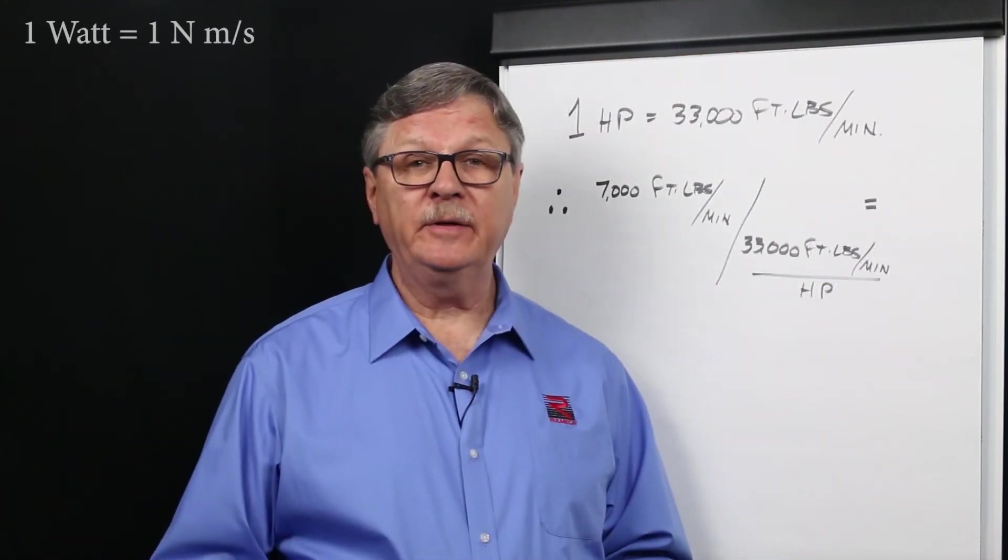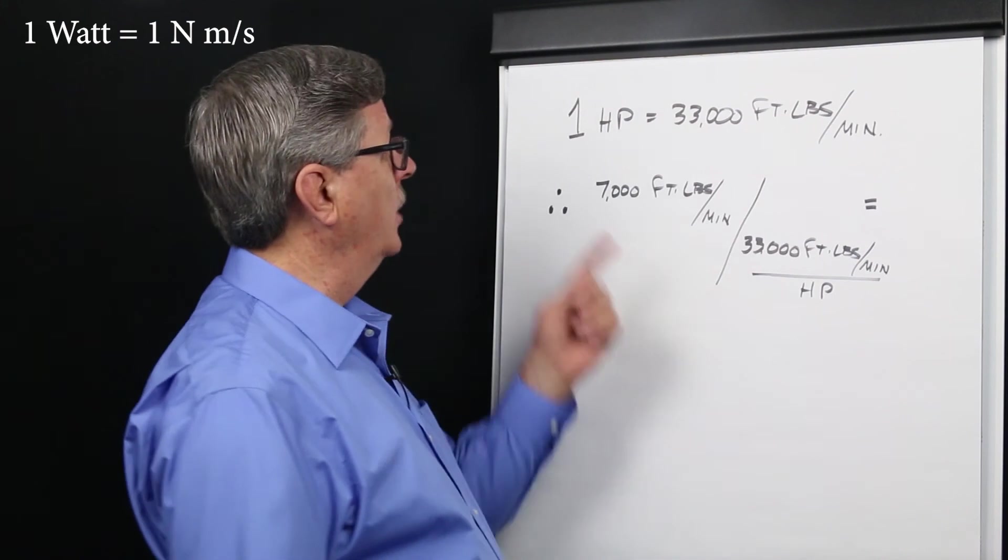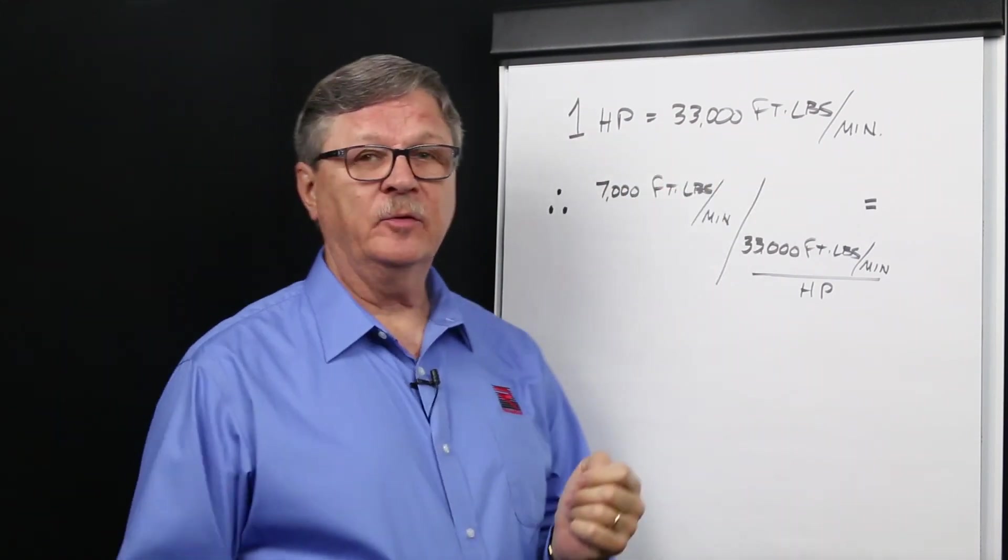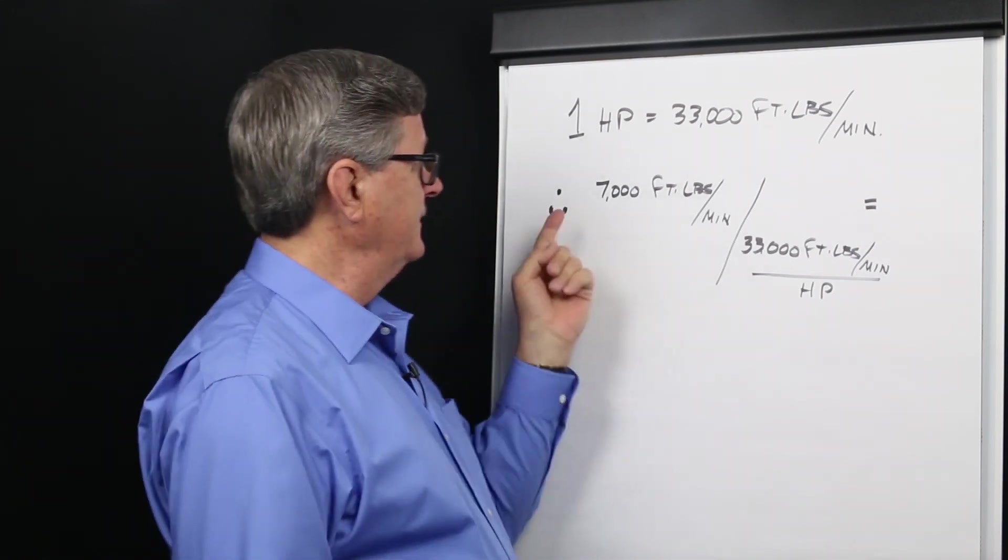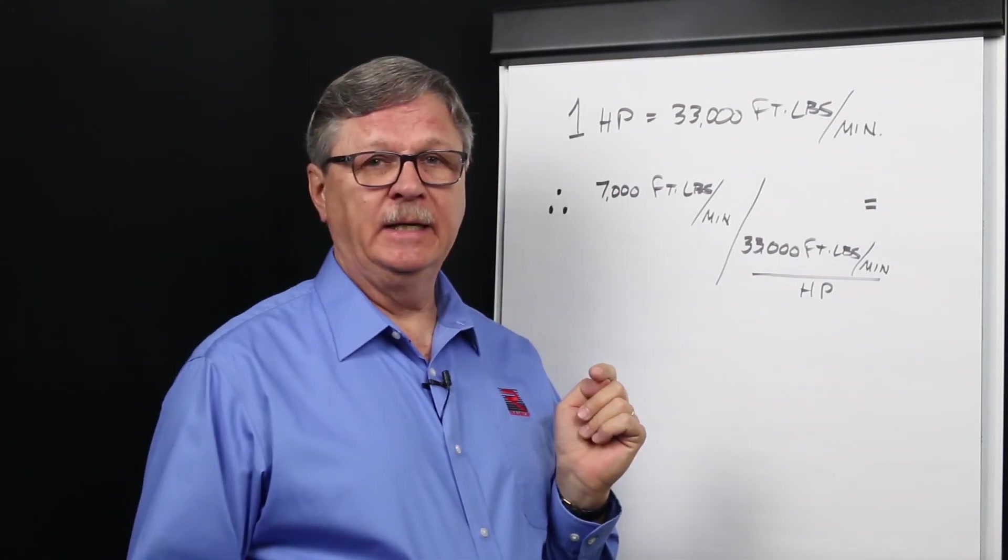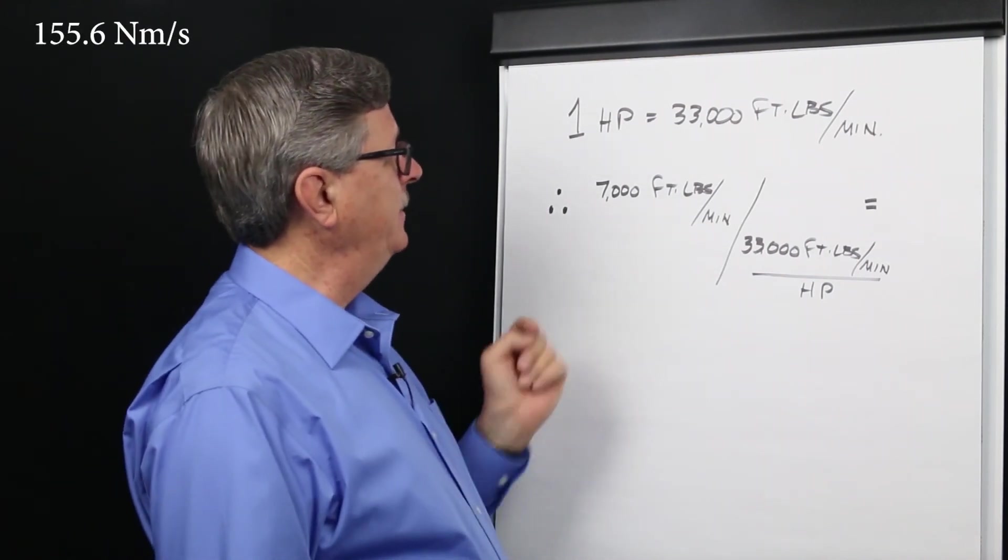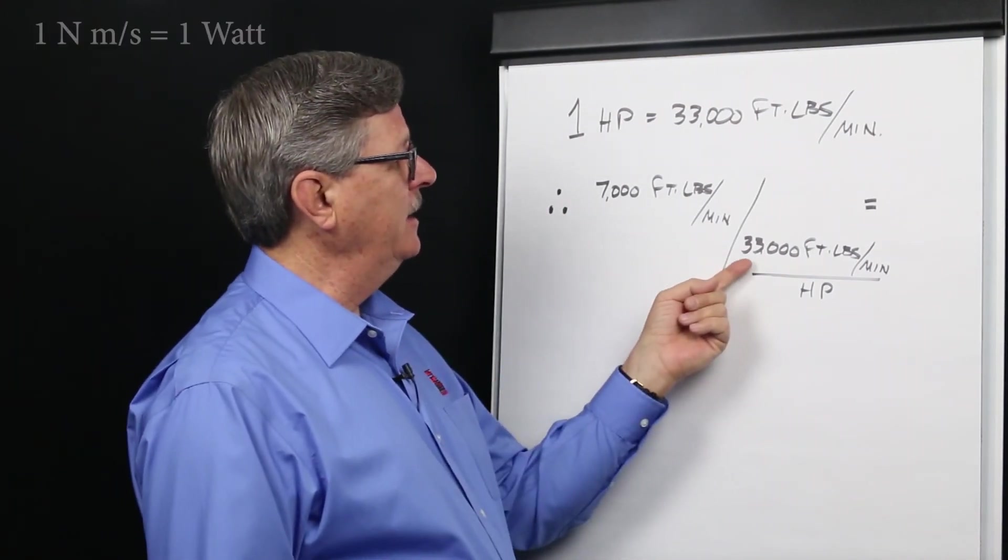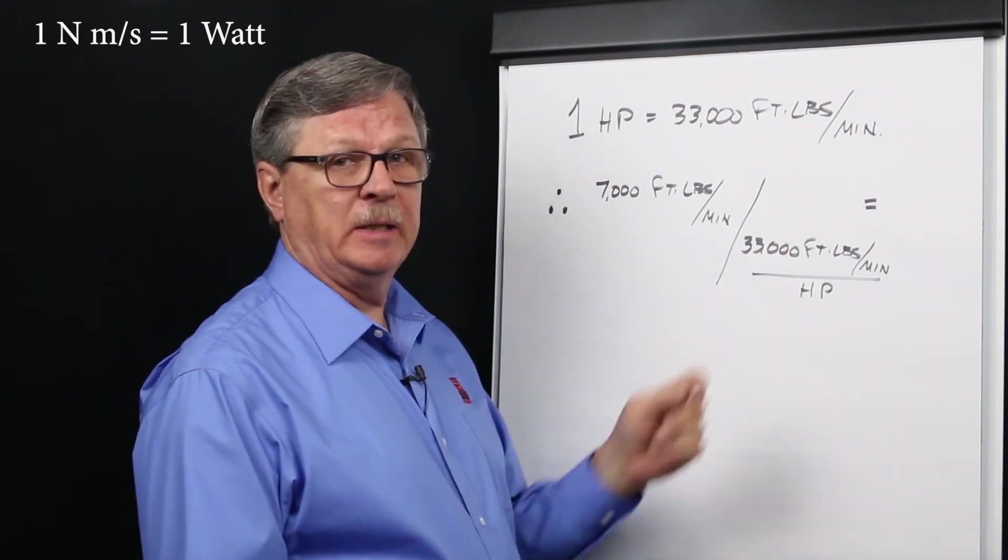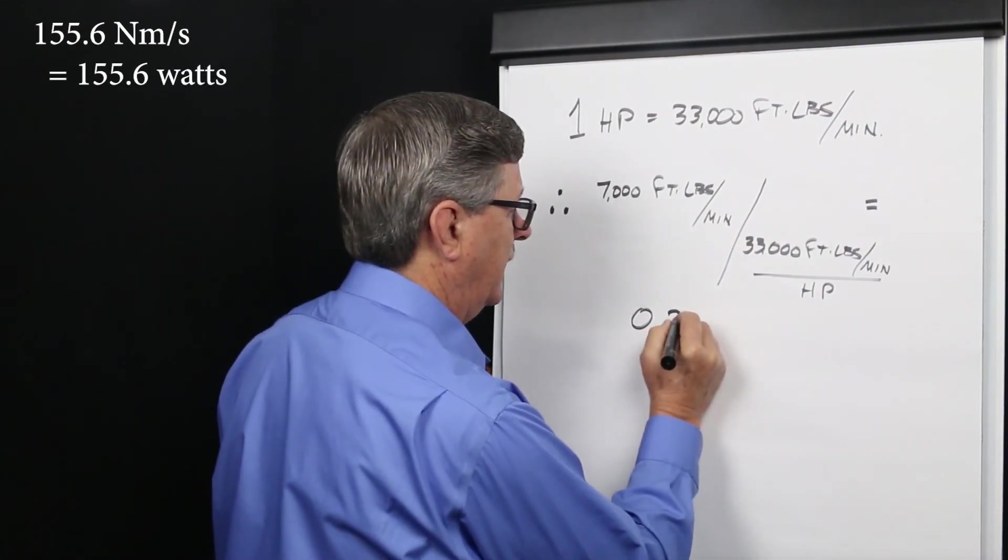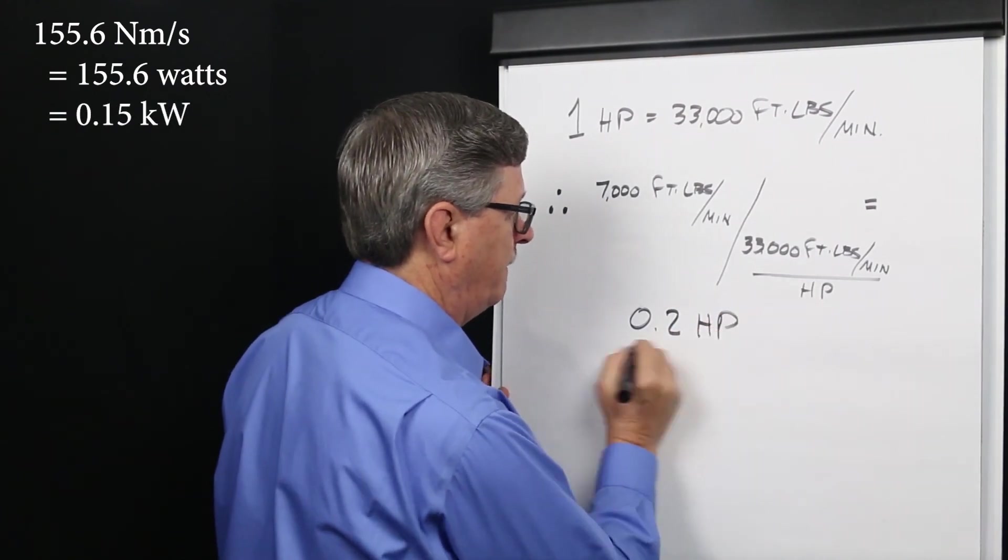In imperial units, we know that one horsepower equals 33,000 foot-pounds per minute. Therefore, our power requirement of 7,000 foot-pounds per minute can be converted using this equation. 7,000 foot-pounds per minute divided by 33,000 foot-pounds per minute per horsepower equals a power requirement of 0.2 horsepower.